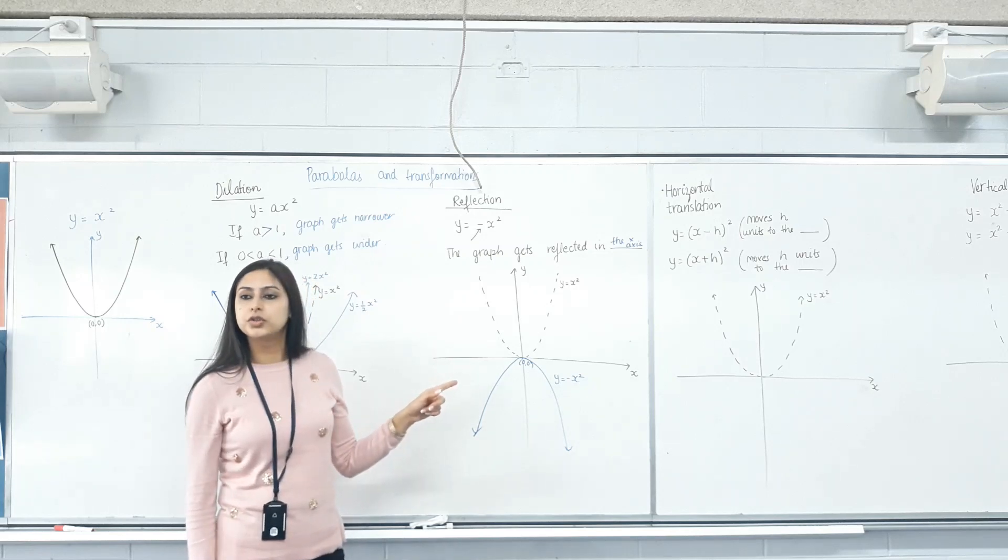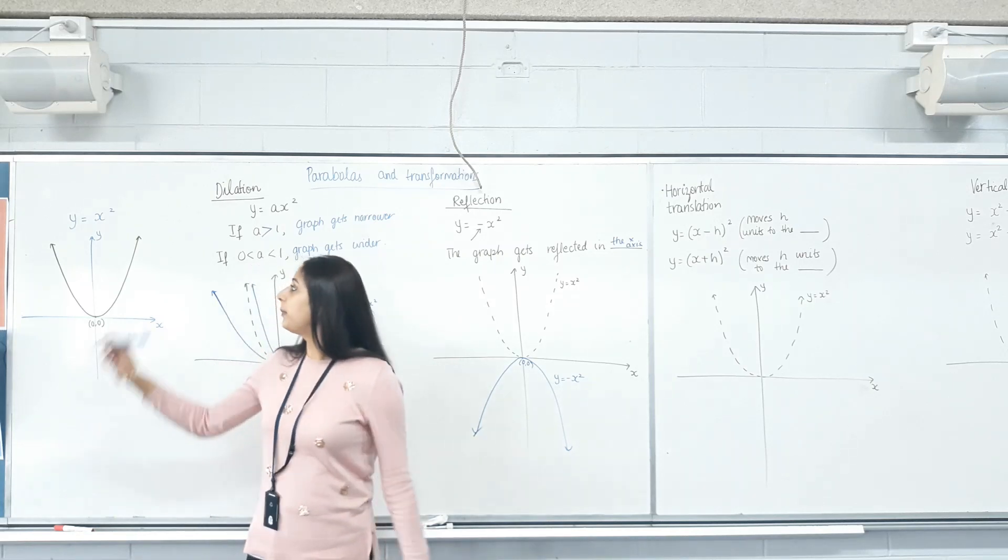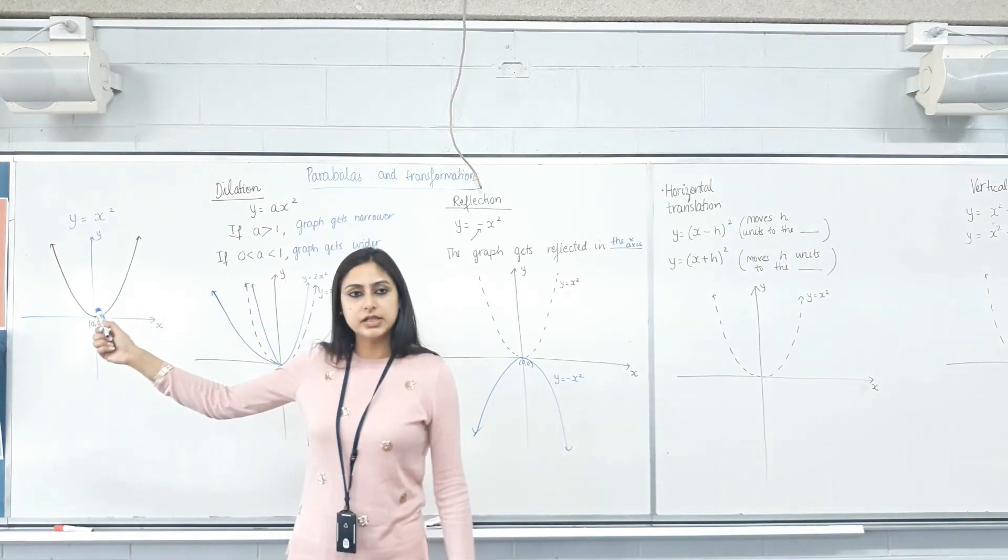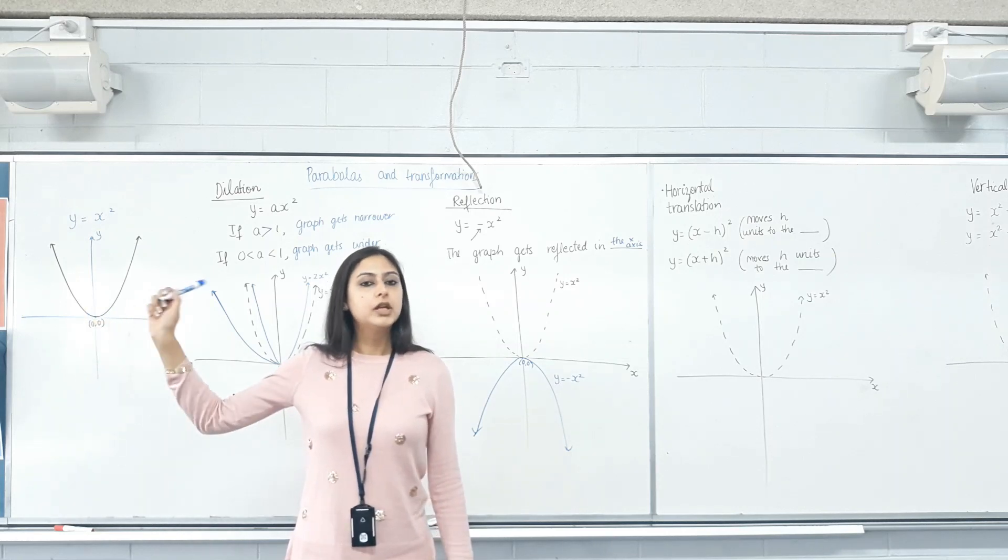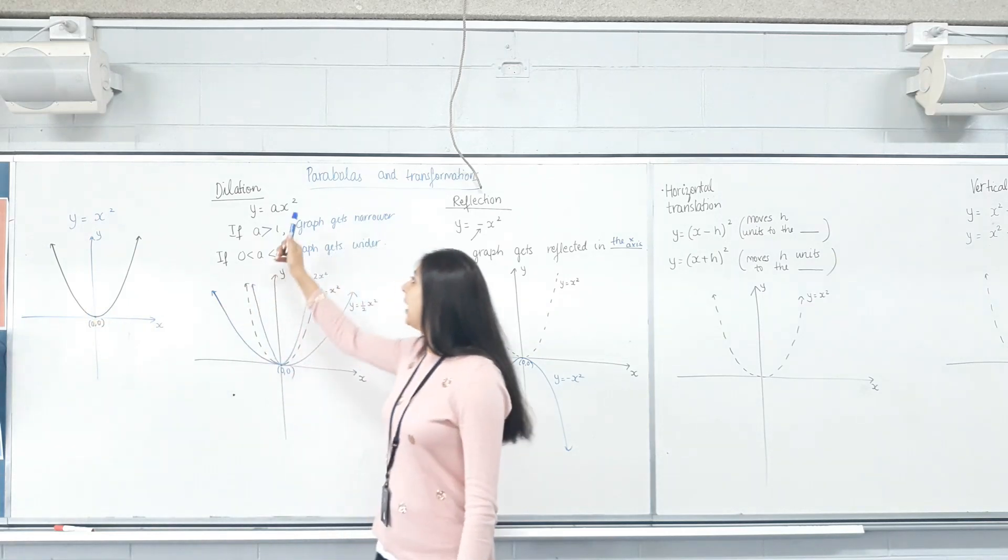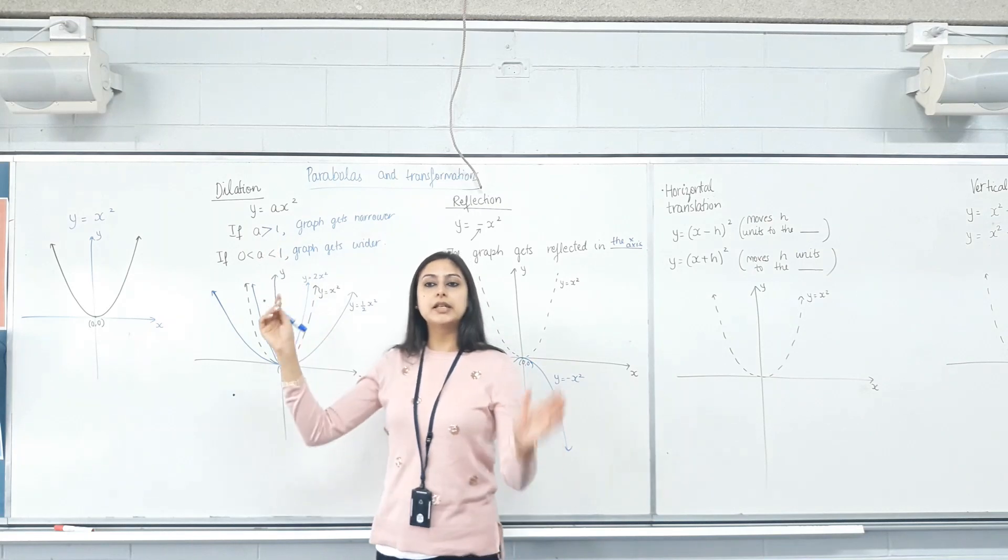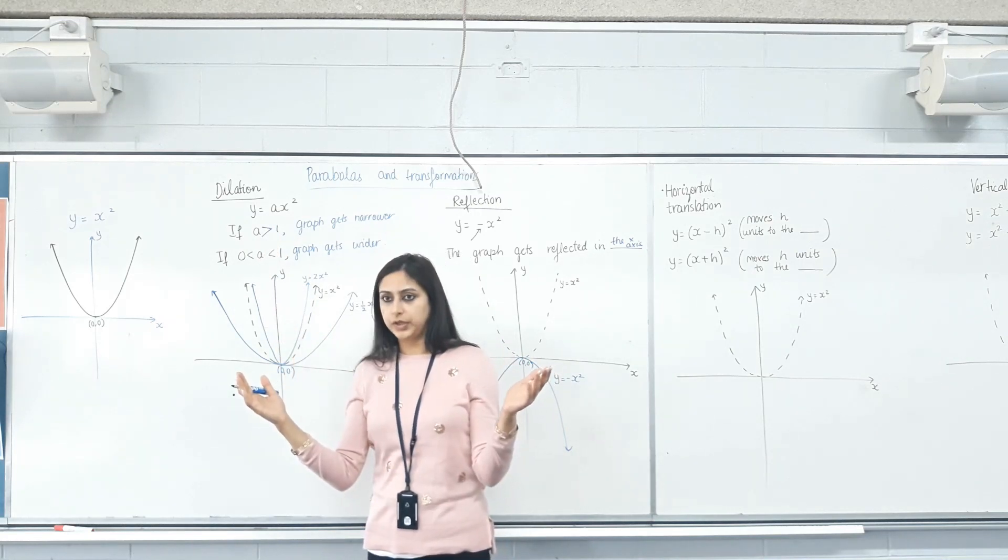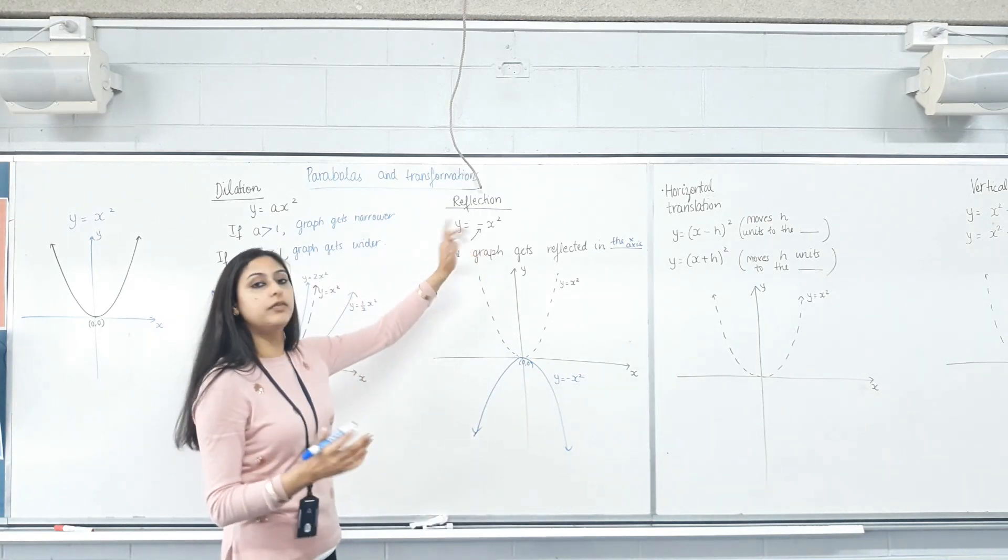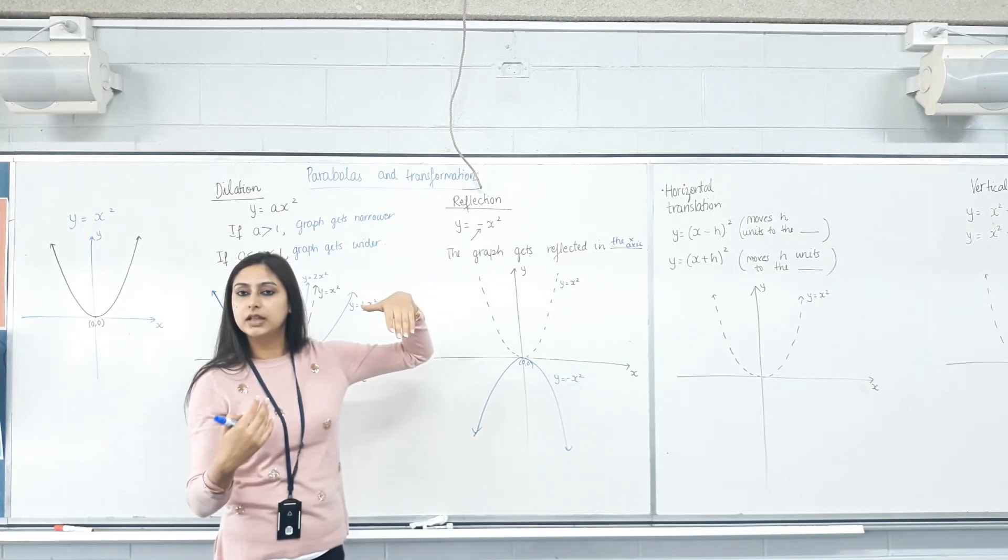Did the turning point change? No. So, remember y equals x squared. We have the basic shape which we call the parabola. Turning point was 0, 0. Multiplying x squared with a number makes it narrower or wider. Okay? And if that number is negative it makes it reflected in the x-axis.